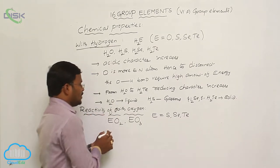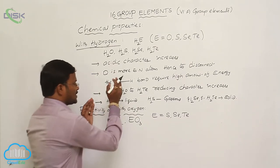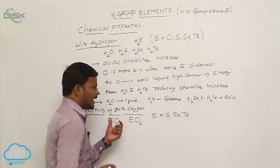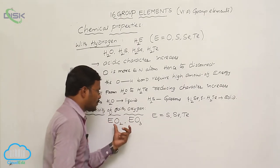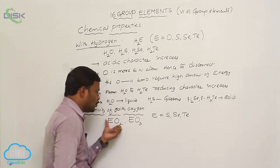By reacting with oxygen, the 16th group elements can exhibit two different chemical formula of oxides. They are EO2, EO3.